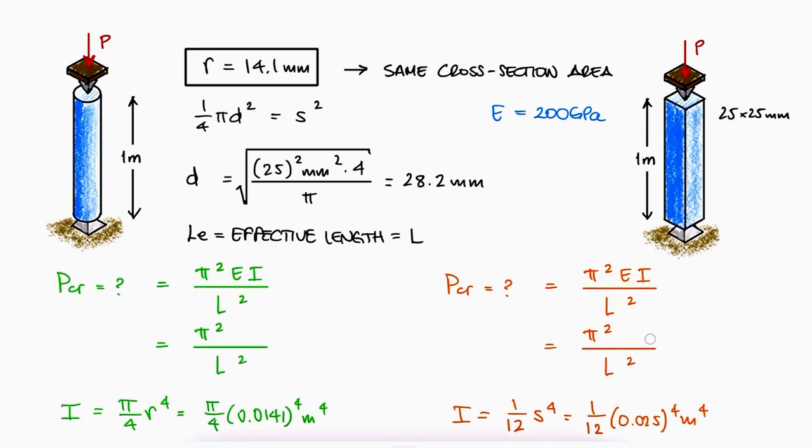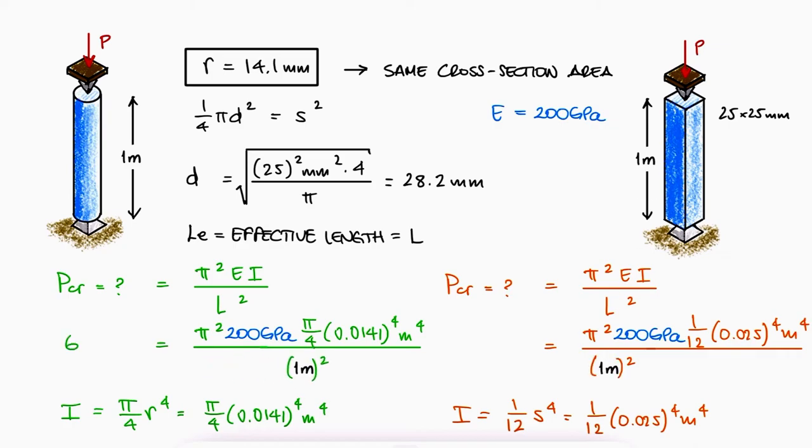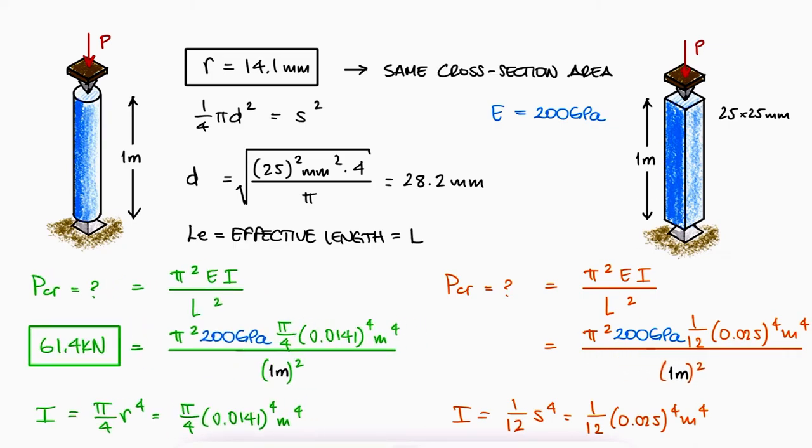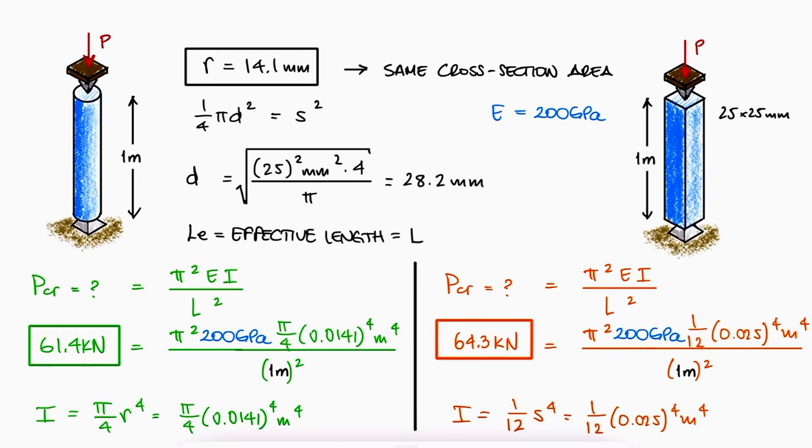Substituting the values, we find that the critical load for the round strut is 61.4 kN and 64.3 kN for the square strut.